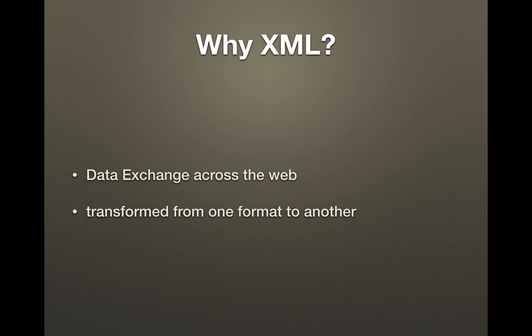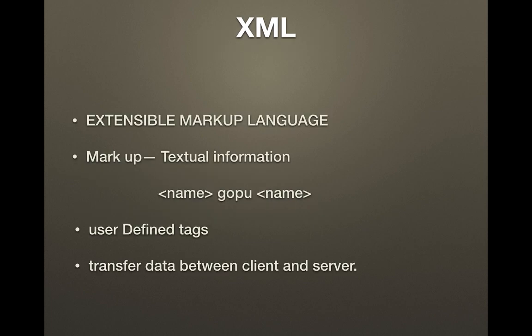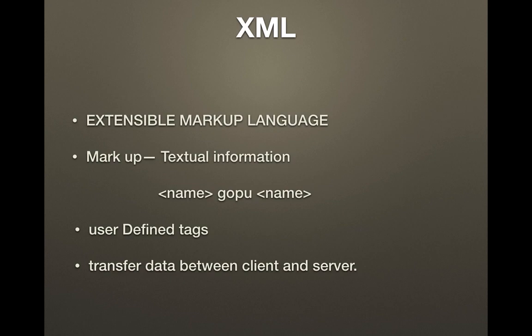XML is a text file. It contains textual information. For example, if you have a value like 3000, it could mean different things — in a student context it could be a marks value, in an employee context it could be a salary. So in XML format we can properly define each and every data that we use and clarify what that data represents.